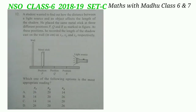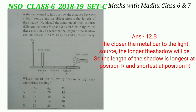Question 12: a student wanted to find out how the distance between a light source and an object affects the length of the shadow. He placed the same metal stick at three different positions P, Q, and R. At these positions he recorded the lengths of the shadows cast on the wall as xP, xQ, and xR. The closer the metal bar is to the light source, the longer the shadow will be. So the shadow is longest at position R and shortest at position P. The correct answer is option B: xP = 14, xQ = 20, and xR = 26.